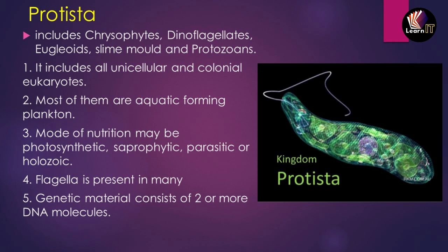Now we'll be talking about Protista. Protista includes chrysophytes, dinoflagellates, euglenoids, slime molds, and protozoans. Some important points: all Protista are unicellular and live in a colonial state, or are colonial eukaryotes. Most of them are aquatic, forming the plankton, which means they live inside water and are the basic source of food for many aquatic animals.